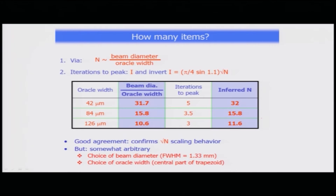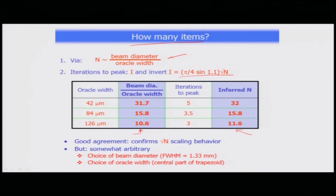Given oracle line widths ranging from about 42 microns to 126 microns, the results follow similar principles. The number of iterations is defined as the beam diameter over the oracle width. Experimentally, the beam diameter-to-oracle-width ratio was found to be roughly the n value, and the number of iterations to peak is roughly √n. The inferred n for each operation was very close to experimental data: 32 versus 31.7, 15.8 versus roughly the same, 11.6 and 10.6 — confirming the √n scaling behavior.